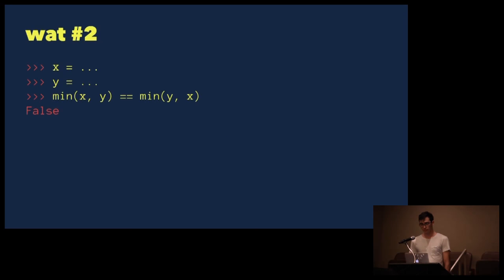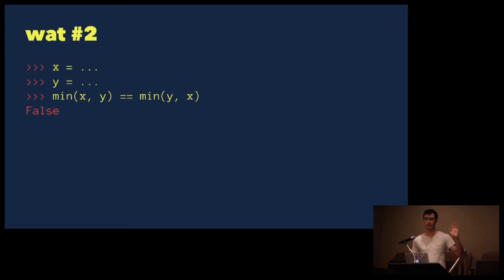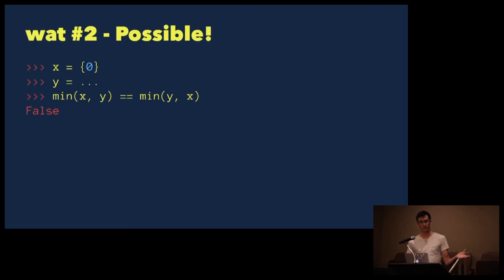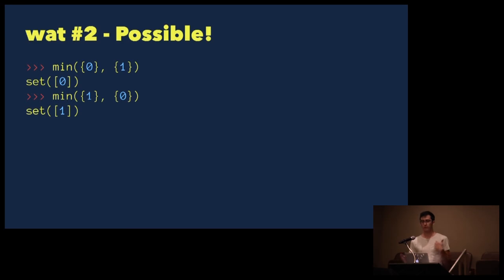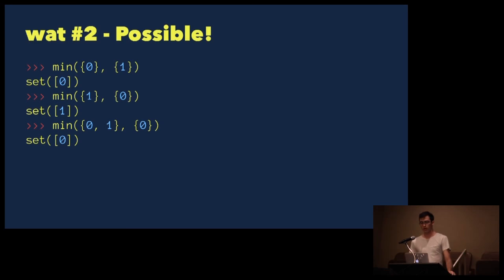Watt number two: can we make an x and a y such that the minimum of x and y is not the same as the minimum of y and x? This depends on the order of the arguments to min. This Watt is actually possible, but only if we set x equal to some set, such as the set containing zero, and y equal to some other set with a different value, such as one. If we take the minimum of the set containing zero and the set containing one, we get the set containing zero. But if we do the opposite, we get the set containing one. It seems like min is broken — it's just returning whatever the first argument is.